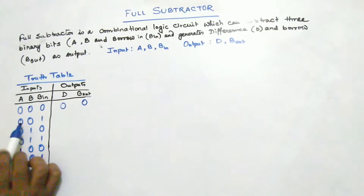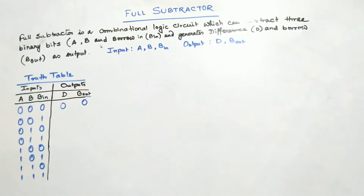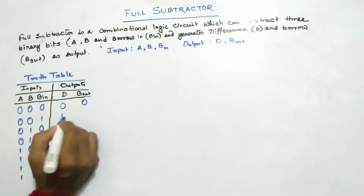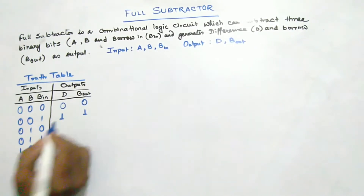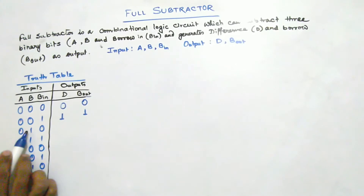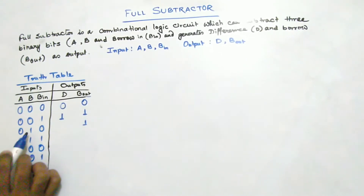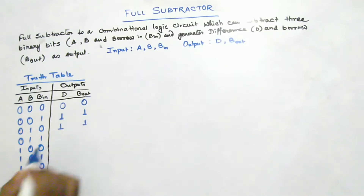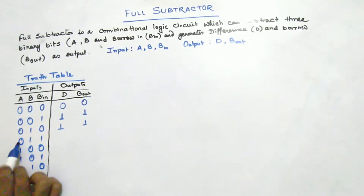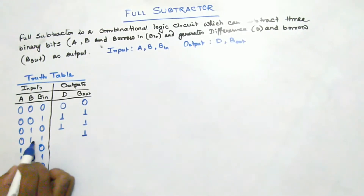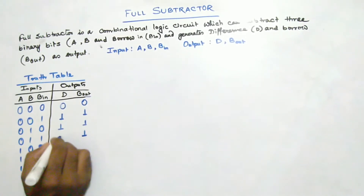In the next case, 0 minus 0 gives 0, and then subtracting 1 from that result: 0 minus 1 means difference is 1 and borrow out is 1. For the following case, 0 minus 1 gives borrow out of 1 and difference of 1. Then 1 minus 0 minus 0 also gives 1. In the next case, 0 minus 1 and 0 minus 1 gives two 1s, so borrow out is 1, and the remaining 1 subtracted from 1 gives difference 0.